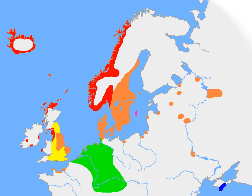These dates, however, are not absolute, since written Old Norse is found well into the 15th century. Old Norse was divided into three dialects: Old West Norse, Old East Norse, and Old Gutnish.